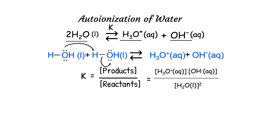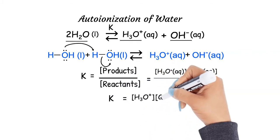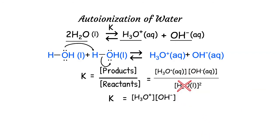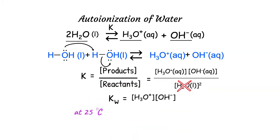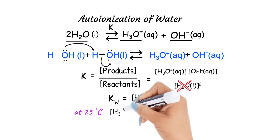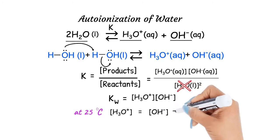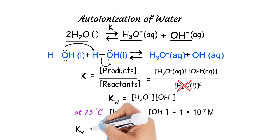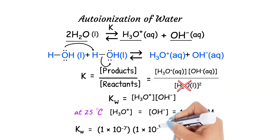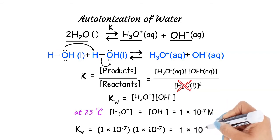However, we do not include solids and liquids in equilibrium constant expressions. Therefore the equilibrium constant K equals the hydronium ion concentration times the concentration of hydroxide ions. Because we are talking about the ionization of water, we call this Kw. At 25°C, the concentrations of hydronium and hydroxide ions have been experimentally determined to equal 1×10⁻⁷ M for pure water. Therefore Kw equals 10⁻⁷ times 10⁻⁷, which equals 10⁻¹⁴.